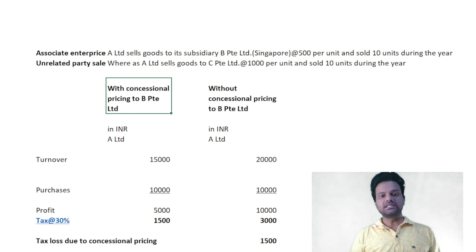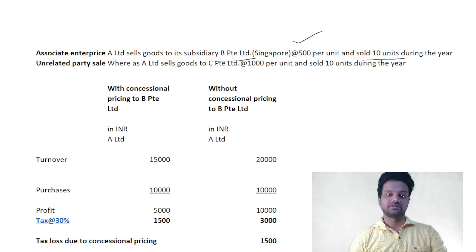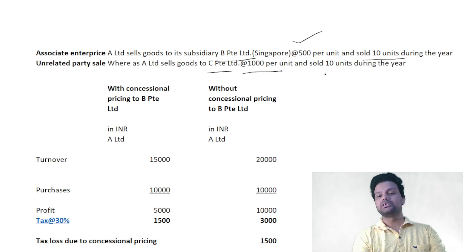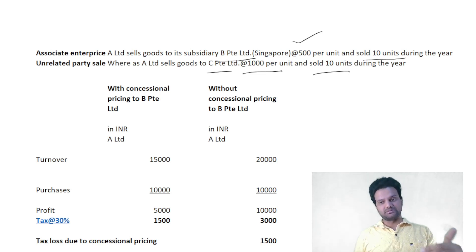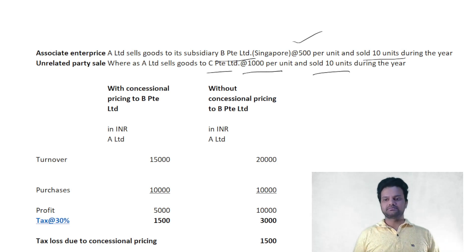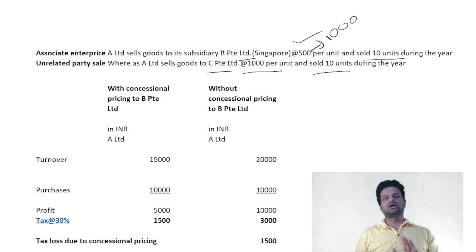A Limited sells goods to its subsidiary BPT Limited — 10 units at 500 per unit. Similarly, it sells the same goods to CPT Limited at 1,000 per unit, 10 units during the year. So because it is selling to its subsidiary BPT, it sold at a lesser price — a 50% discount has been given.